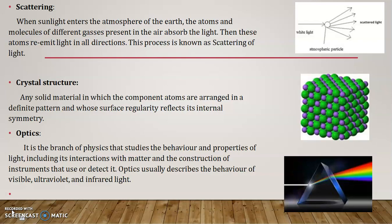The next word is crystal structure. In the diagram of light, you can refer to a crystal structure. It is any solid material in which the component atoms are arranged in a definite pattern and whose surface regularity reflects its internal symmetry. It is a compact, packed structure. That is our crystal structure.